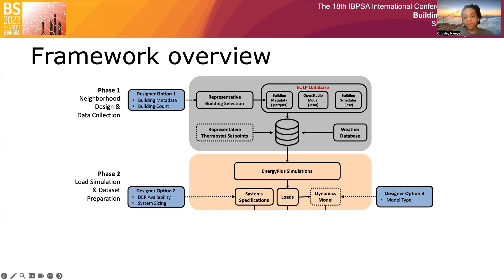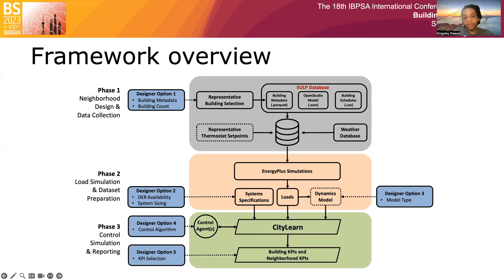The resulting system specifications and simulated ideal loads are then utilized to create a virtual representation of the intended neighborhood in CityLearn. In phase three, the designer selects a control algorithm to manage DERs in CityLearn. Post-simulation evaluation of control performance is achieved through user-selected KPIs that quantify grid flexibility, environmental impacts, or occupant comfort.